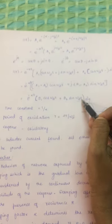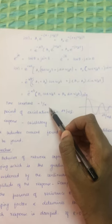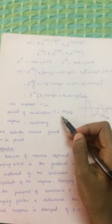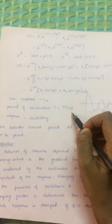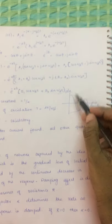For the under-damped case, the time constant is 1/alpha, and the period of oscillation T = 2*pi/omega_d.